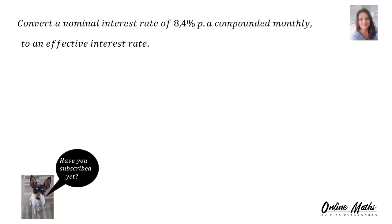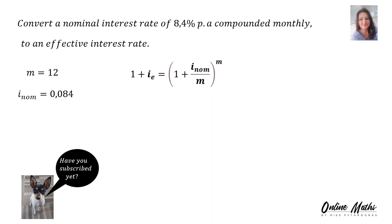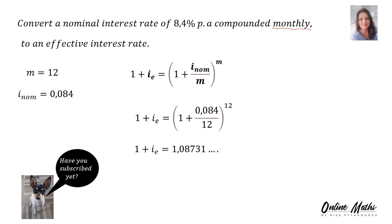Let's do an example: convert a nominal interest rate of 8.4% per annum compounded monthly to an effective interest rate. Our M is 12 because it's compounded monthly, and I-nominal is 8.4% divided by 100, which is 0.084. Using the formula, I-effective equals 1 plus 0.084 divided by 12, raised to the power of 12. Slotting that into the calculator gives 1.08731.